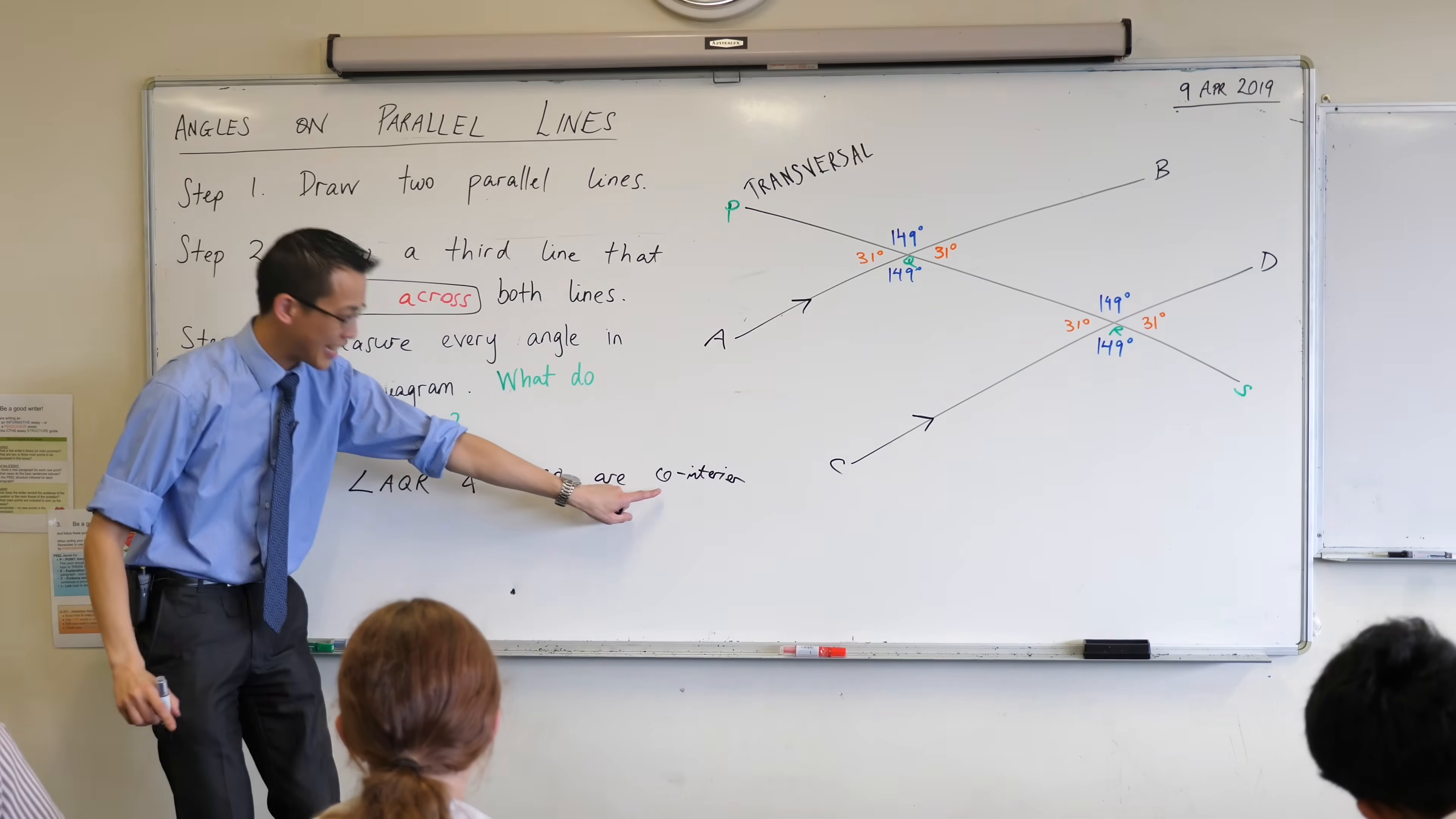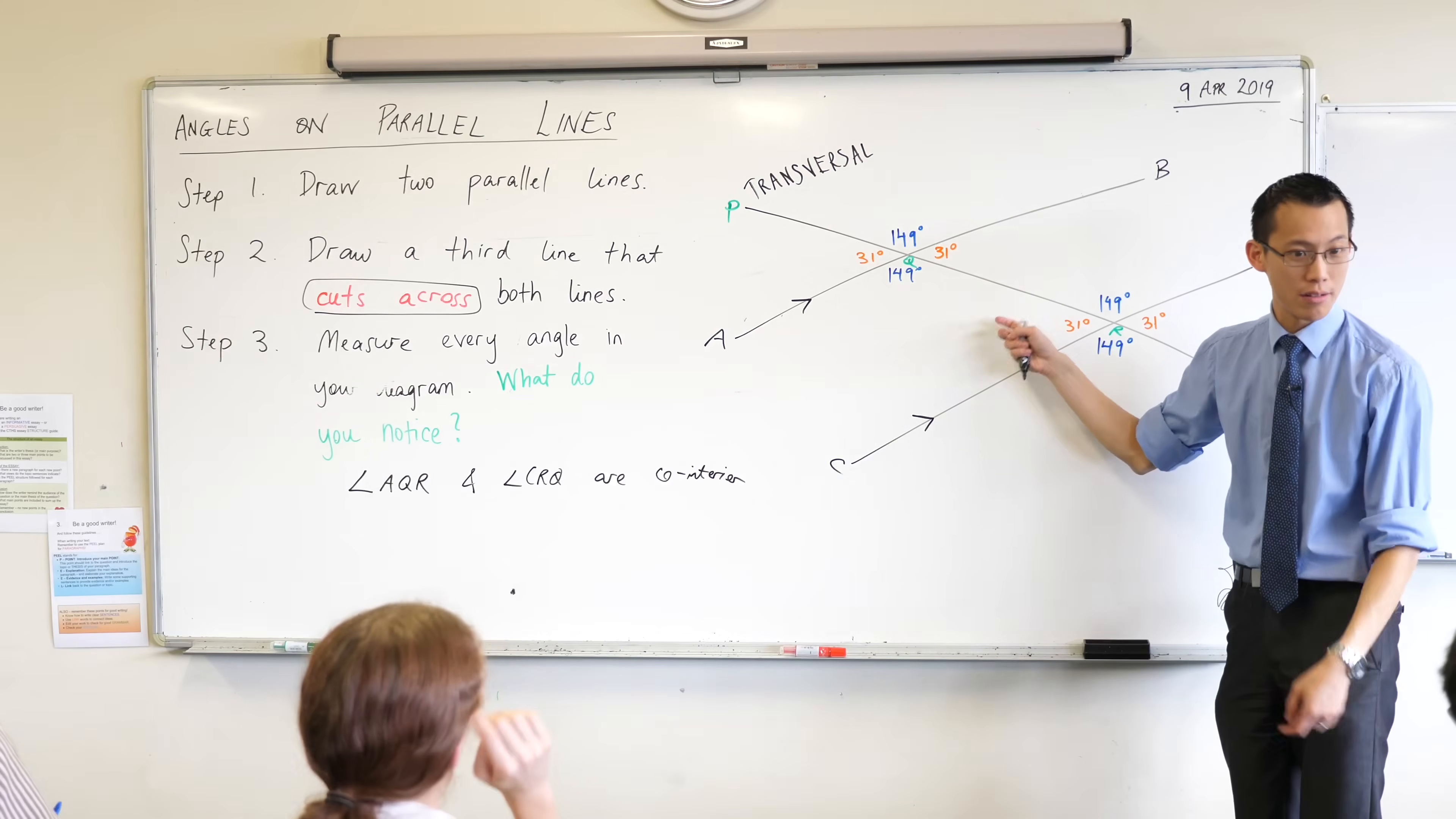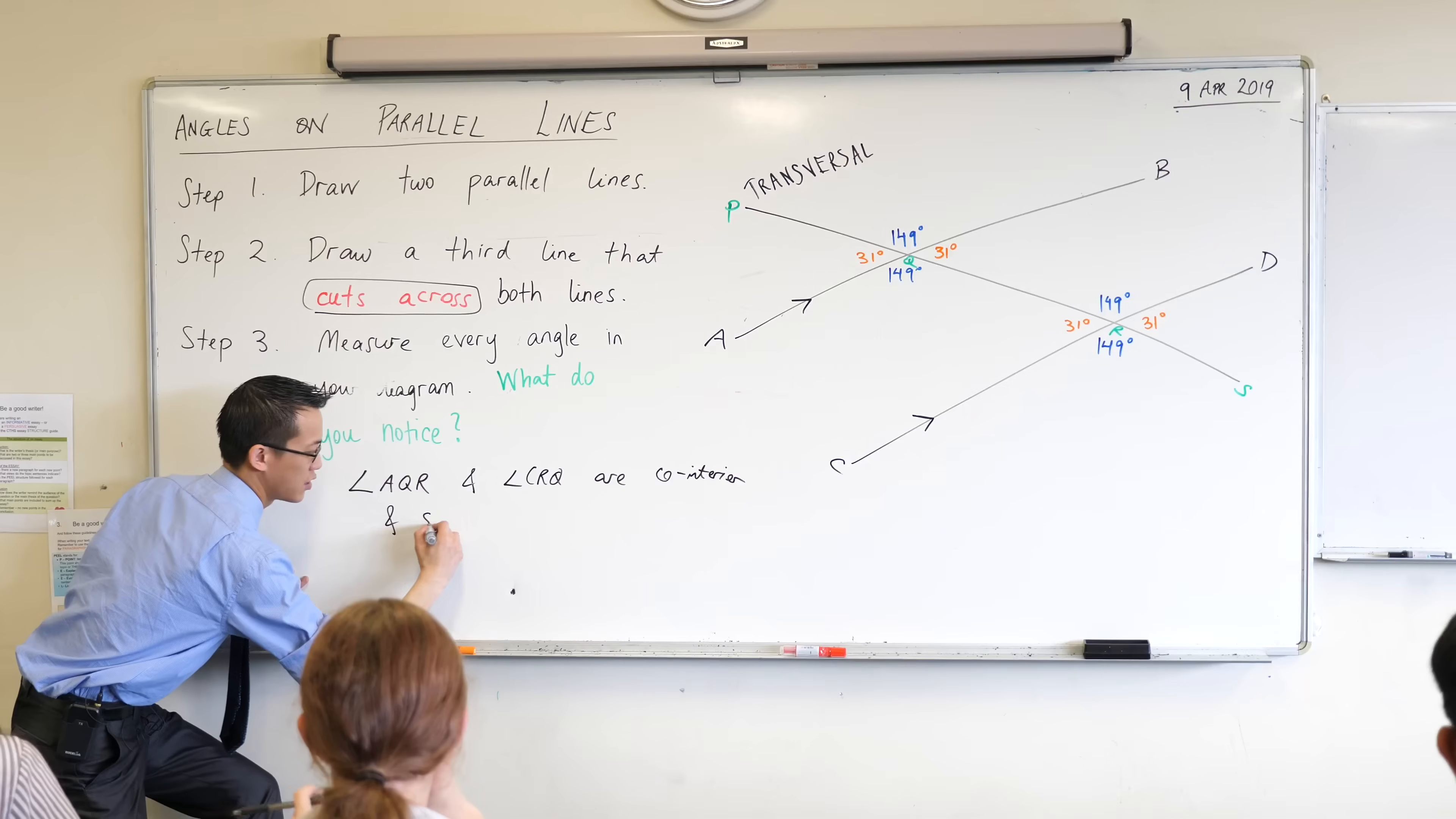And that literally means together inside, right? And because they're co-interior, what do you notice about the numbers? 149, 31. What do you see? Yeah, go ahead. Okay so when we add them up together, 149 plus 31, we get 180. Do you remember we encountered a word yesterday and last year that means you add them together to get 180? Can someone else help Krishan out? Someone different? Yeah Anush. Supplementary. Supplementary. Very good. AQR and CRQ are co-interior and supplementary.